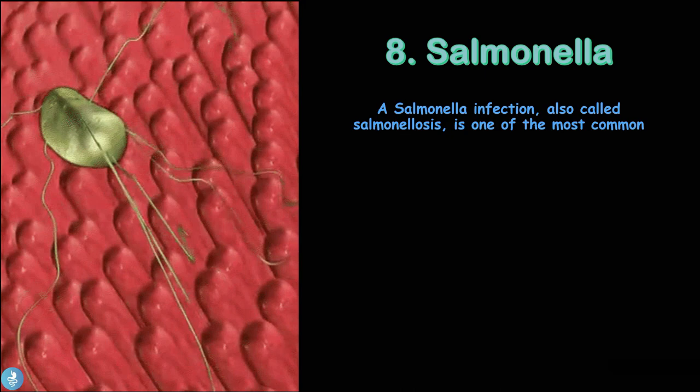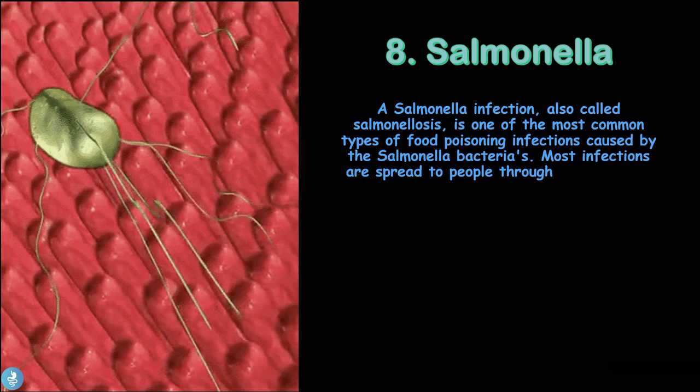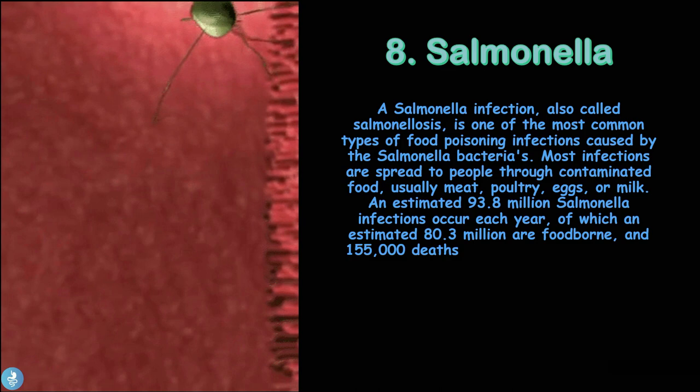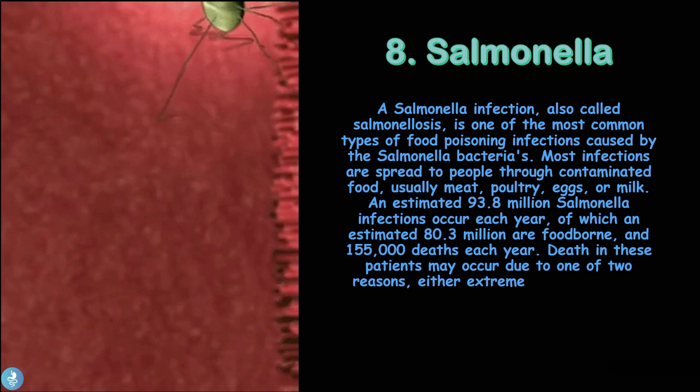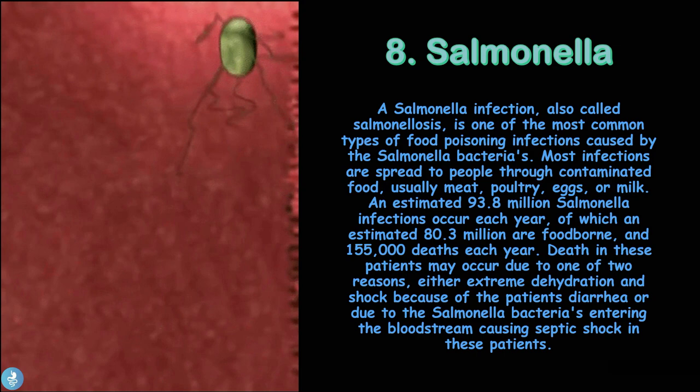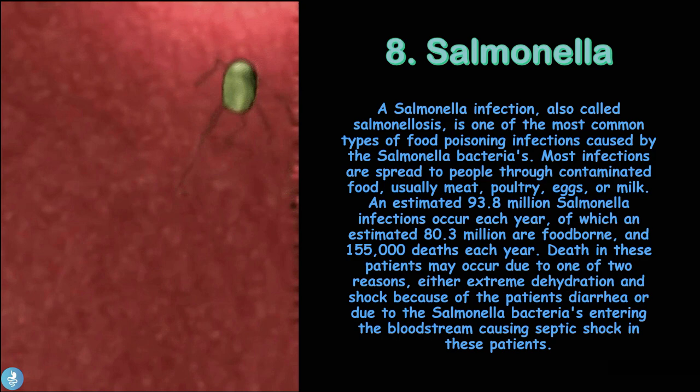Number eight is salmonella. Salmonella infection, also called salmonellosis, is one of the most common types of food poisoning, usually spread through contaminated meats, poultry, eggs, or milk. An estimated 93.8 million salmonella infections occur each year, of which 80.3 million are foodborne, resulting in 155,000 deaths annually. Death may occur due to extreme dehydration and shock from diarrhea, or from the salmonella bacteria entering the bloodstream and causing septic shock.